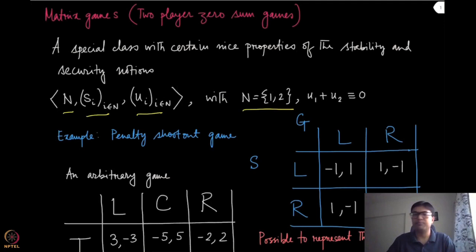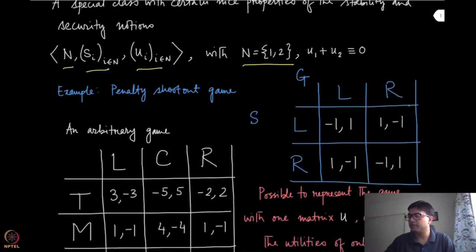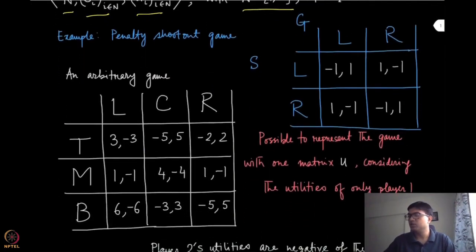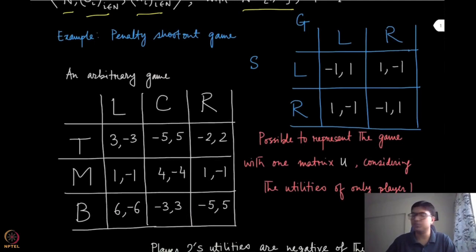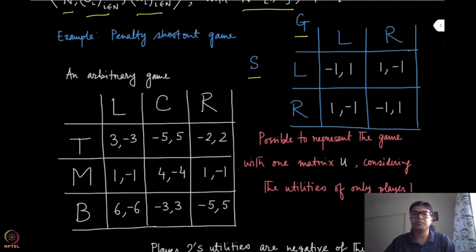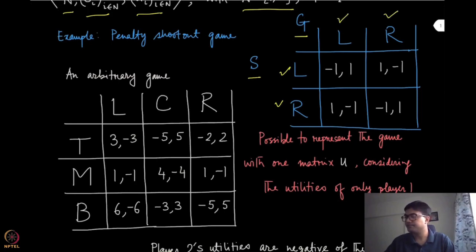To explain this notation better, I have modified the previous penalty shootout game by removing one of the strategies for both players. The first player is the shooter and the second player is the goalkeeper. Now they have only two strategies each: shoot on the left or shoot on the right for the shooter, and dive on the left or dive on the right for the goalkeeper. The utilities remain the same.